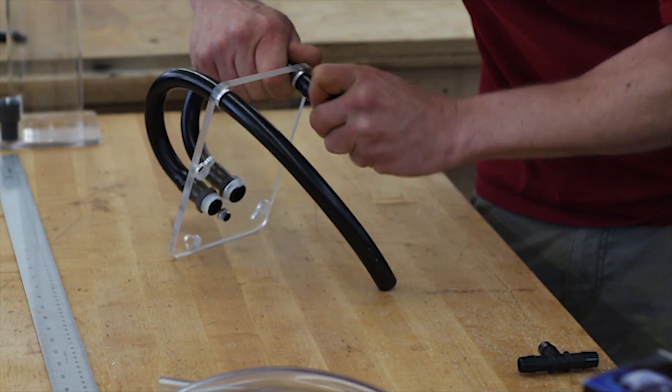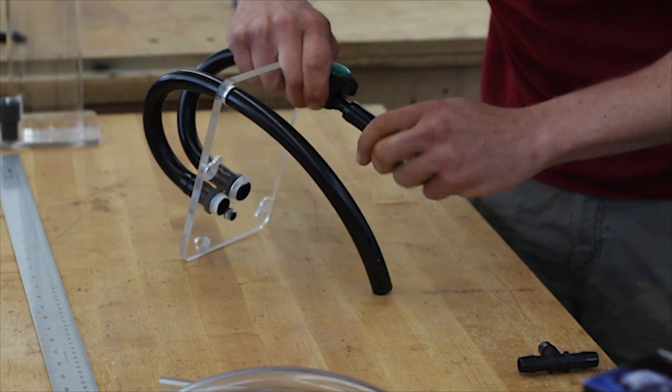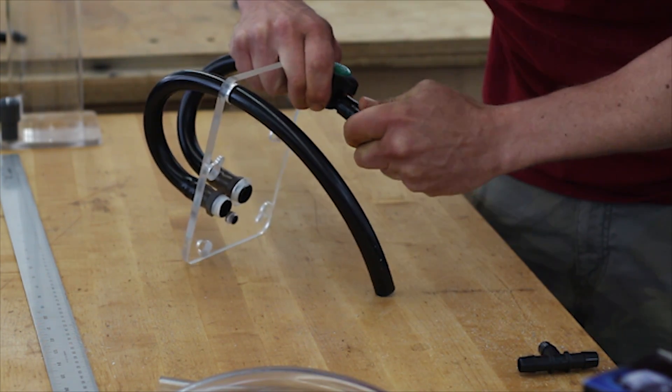Take one of the valves and attach to the shorter section of the tube that comes through the lid. Then add one of the small pieces of tubing and slide on a T.